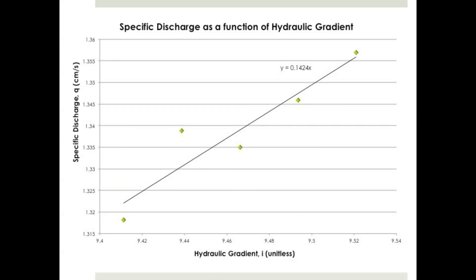Before we discuss the plot, we must define the Y-axis parameter. On the Y axis is a quantity known as specific discharge, or the Darcy velocity, often expressed as little q. Numerically, it is the flow rate Q divided by the cross-sectional area of the sample — so it is the velocity of a fluid particle moving throughout the porous media. By plotting specific discharge as a function of hydraulic gradient, a linear line through the dataset should be seen because the coefficient of permeability is constant and unique to the soil. The slope of this line, 0.1424 centimeters per second, is the average of the K values found on the previous page. The better the fit, the more accurate our results are.